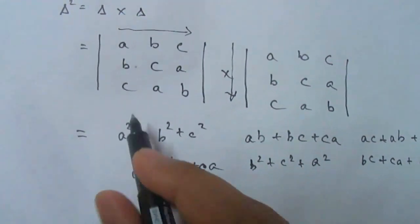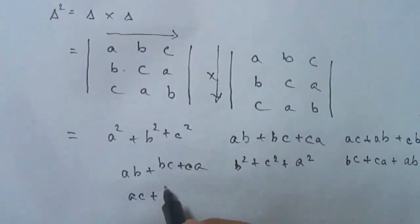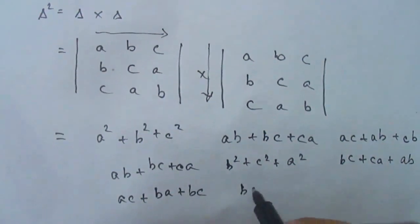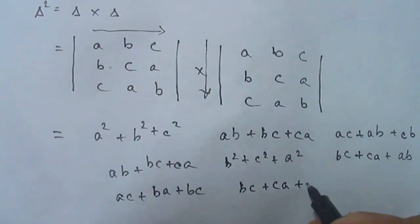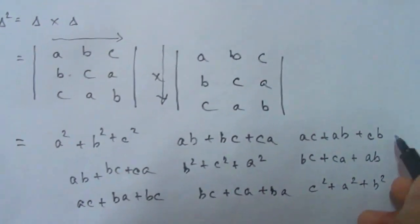Now again this row goes with this column. Ac plus ba plus bc. This will be bc plus ca plus ba. This will be c square plus a square plus b square.